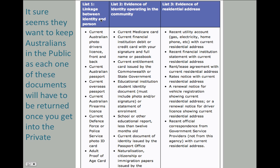There's quite a huge list of things here. Linkage between identity and person — you want a current Australian photo driver's license front and back, current Australian passport, current overseas passport, all those ones there. The criteria is you need one from each list: one, two, and three, or otherwise. You need to fulfil that criteria if you're going to get your birth certificate and printouts.